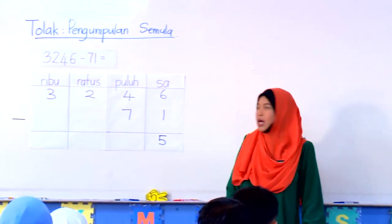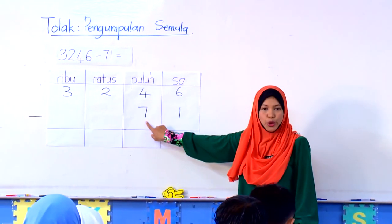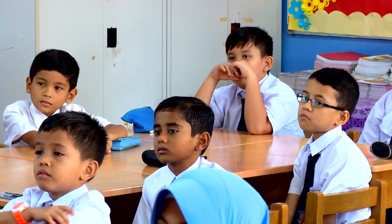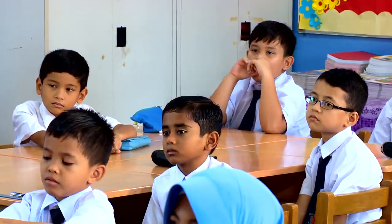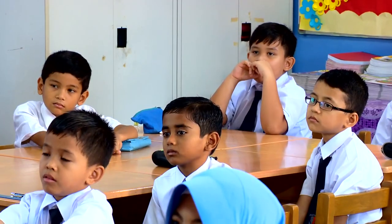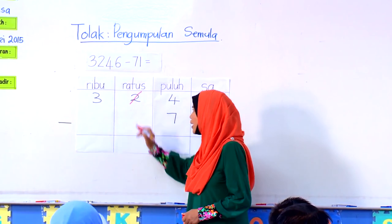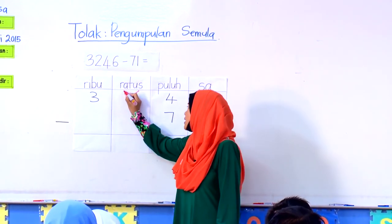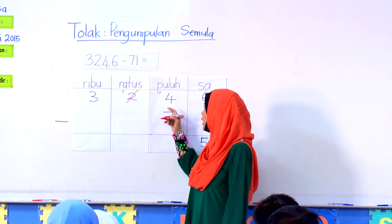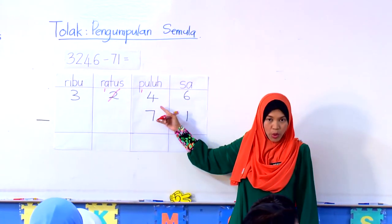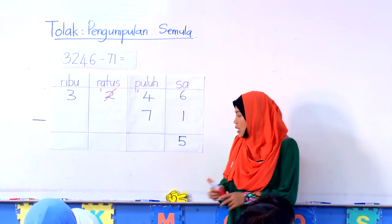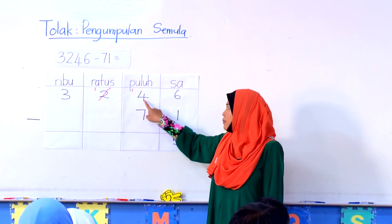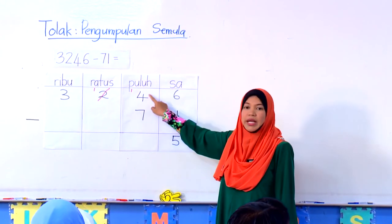Seterusnya, kita nak tolak 4 tolak 7. 4 tolak 7 tidak boleh, kerana 4 lebih kecil daripada 7. Apa yang perlu kita buat? Pinjam. Kita pinjam daripada rumah ratus. 2 pinjam 1 tinggal berapa? 1. Tinggal 1. Yang ini, kita letakkan dekat rumah puluh. Sekarang ini, kita abaikan 1 yang kita pinjamkan tadi itu. Kita balik kepada nilai asal, iaitu 4.